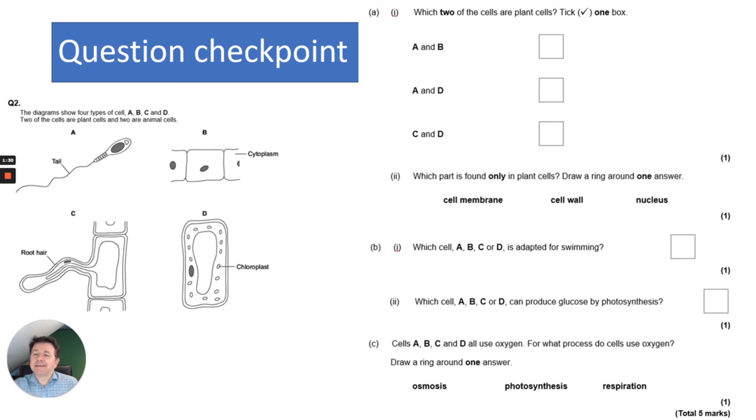Welcome back. Question two shows four types of cells. It says two of the cells are plant cells and two are animal cells. Which two of the cells are plant cells? The first clue is chloroplast, so definitely D is a plant cell. Now A is a sperm cell, so it can't be A and D. But C is a root hair cell, so it would be C and D.